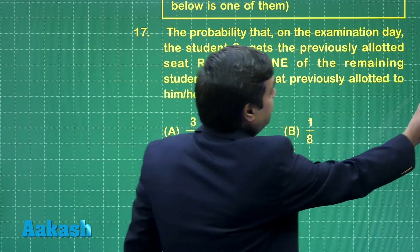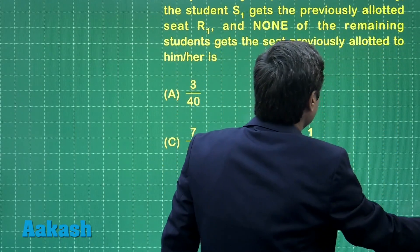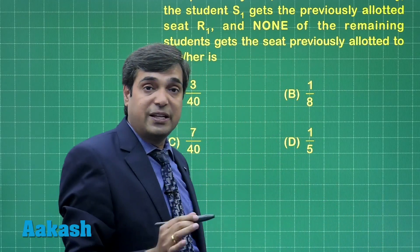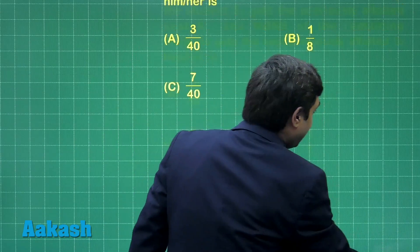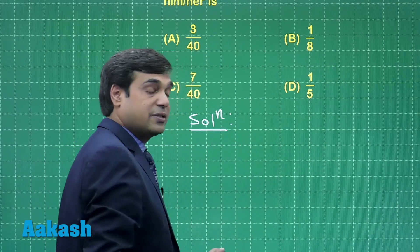When we say only one student gets the seat previously allotted to him or her, that means we are talking about derangement for rest of the students.